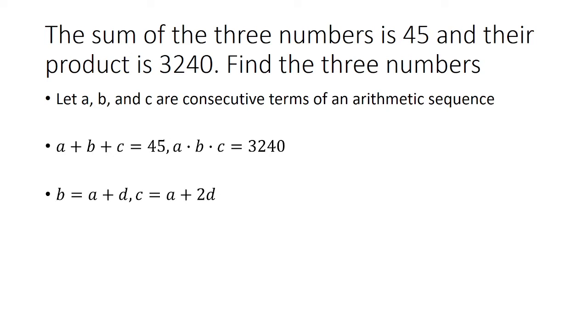Now because A, B, and C are consecutive terms of an arithmetic sequence, we can write them in terms of the original or the first term with a common difference. So just for this problem, I'm going to assume that A is less than B is less than C.